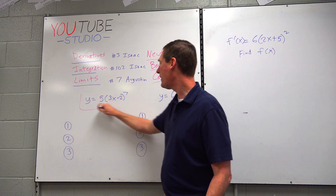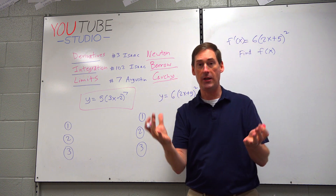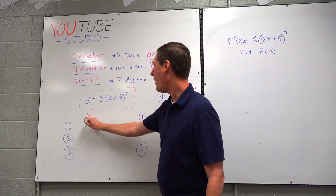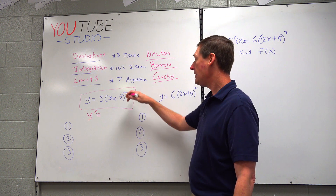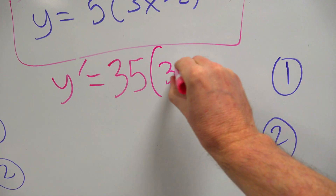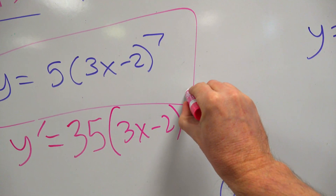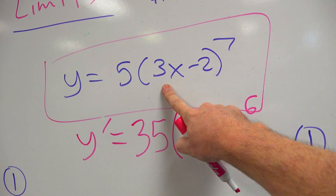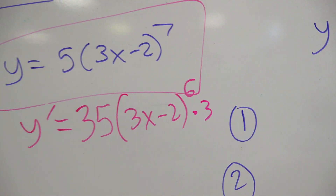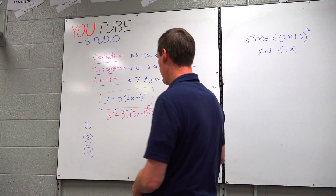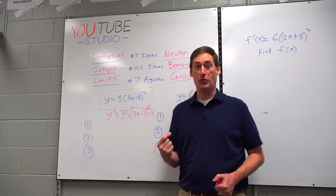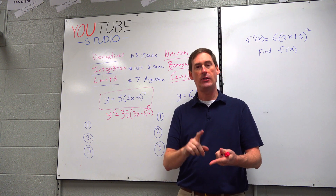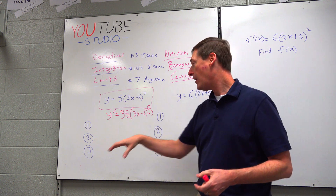Let's start with this example: y = 5(3x − 2)^7. How would you take the derivative? We can do that in our sleep by now. y′ = 7 × 5 = 35, base stays the same, power drops from 7 to 6, and don't forget the chain rule — the derivative of the base (3x − 2) is 3, so we multiply by 3. This power rule applies to basic polynomial expressions, not to sine, cosine, tangent, log, and exponentials.